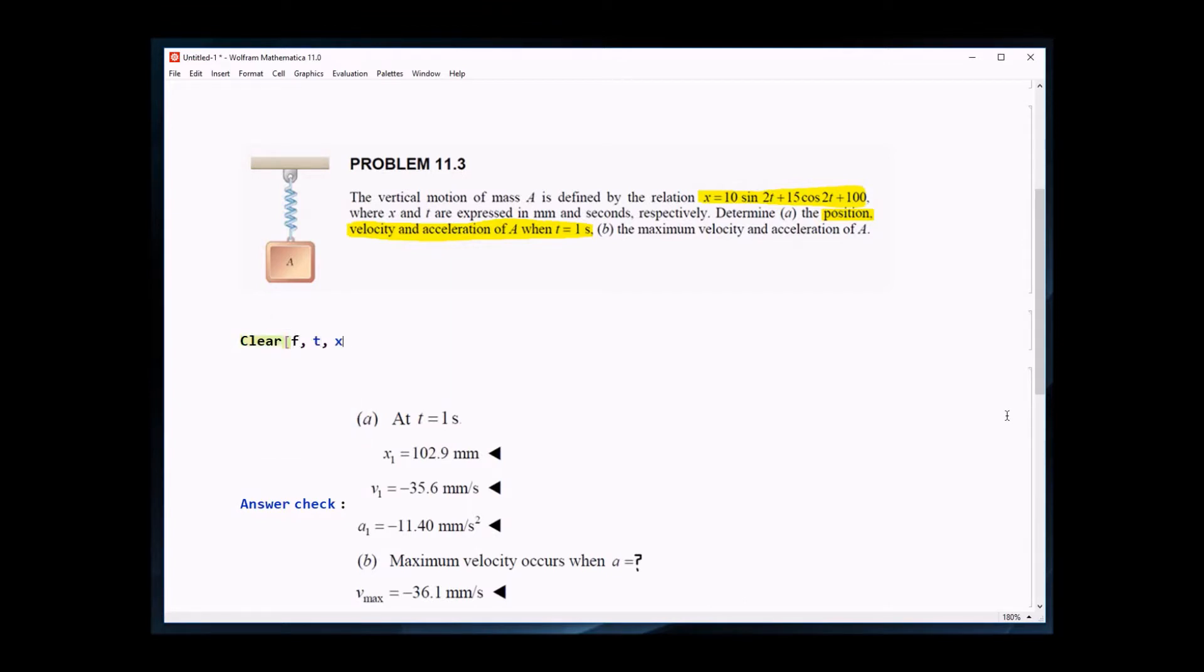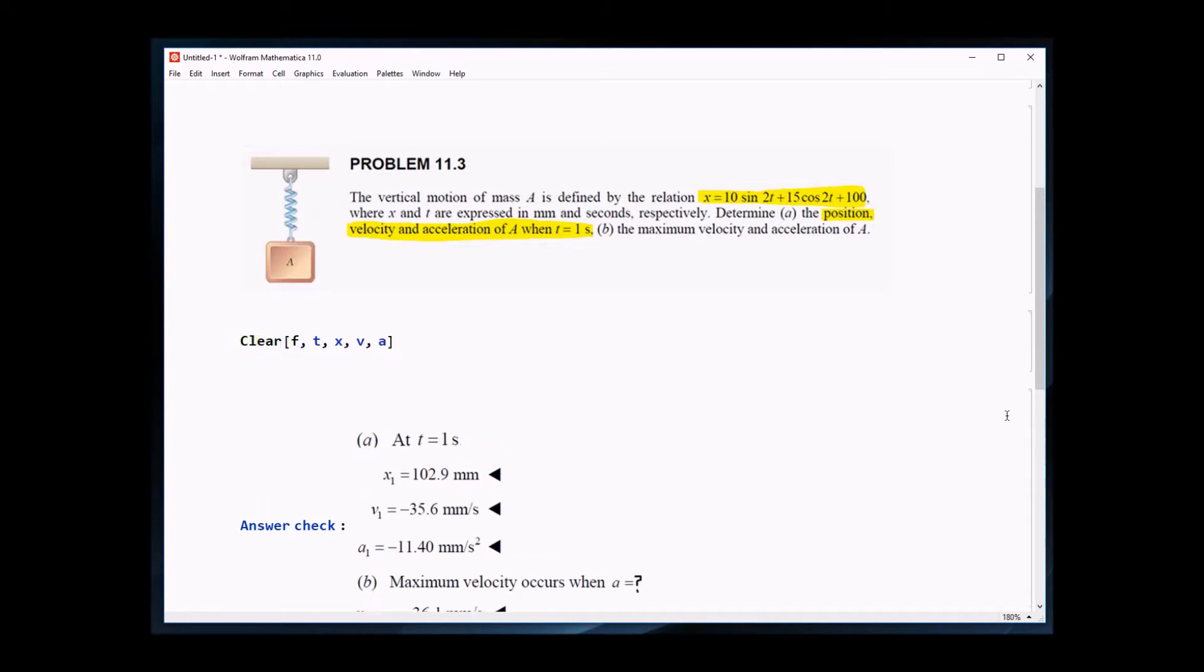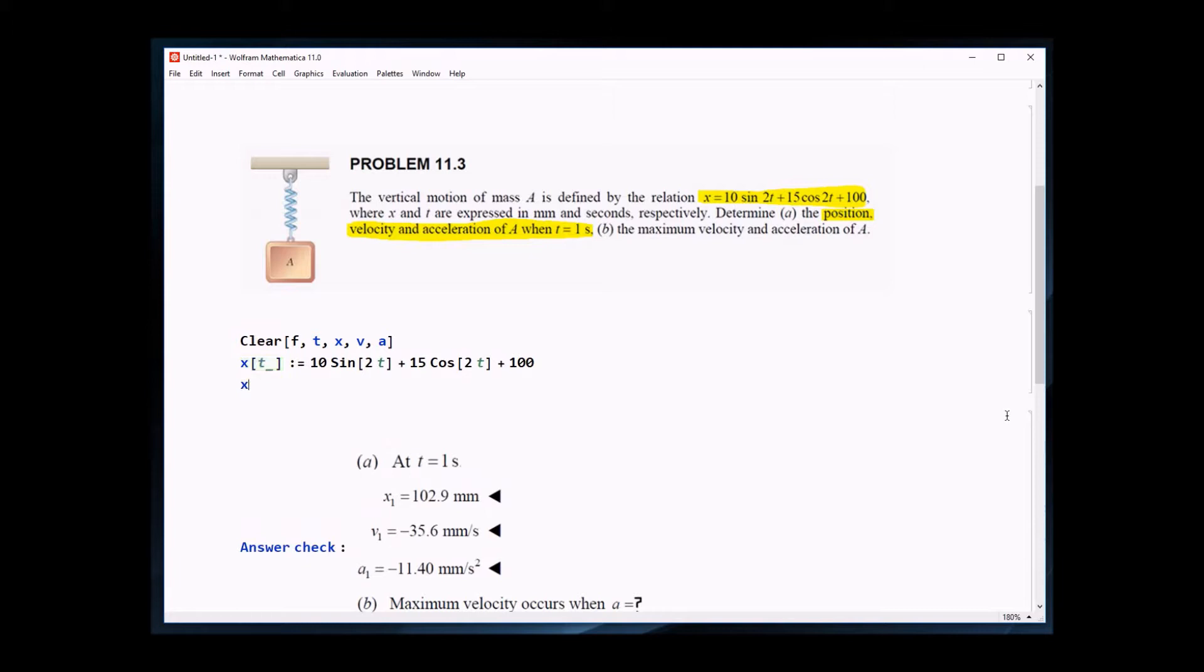Let's just start with part A here. First thing you're going to do, clear out your variables, and now we're going to just type in the equation they give us for our position as a function of time. How I'm typing it in here, this is how you define a function in Mathematica. Not too bad. Just use some square brackets, colon equal sign, capital S for sine, and just notice how all the brackets here for all the little functions are square.